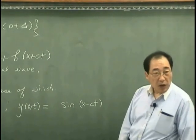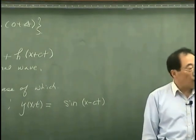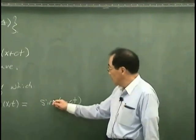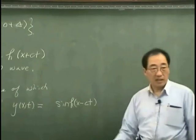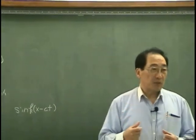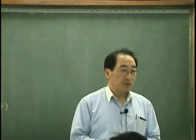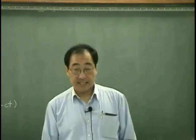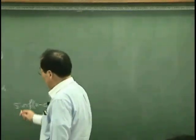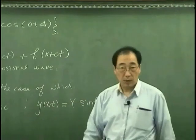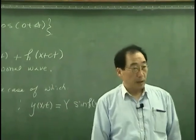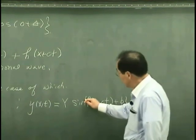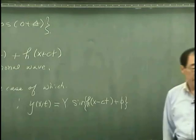But x minus ct has a dimension of length. The sine cannot take it. So we need some constant that can make the argument of sine to be radian. Let's say that is k. We don't know what is k yet. And assume that displacement is capital Y, and then we may say there will be some initial phase.